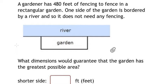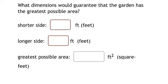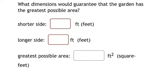So now I will show you how to answer. A gardener has 480 feet of fencing to fence in a rectangular garden. One side of the garden is bordered by a river and so it does not need any fencing. The question: what dimensions would guarantee that the garden has the greatest possible area?